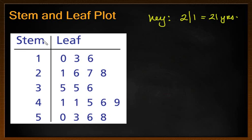We have the stem, which we refer to usually as the tens column, and the leaf is referred to as our units. So in this particular key, we've got the 2 and the 1. What that means is that we join those two numbers together to make 21.